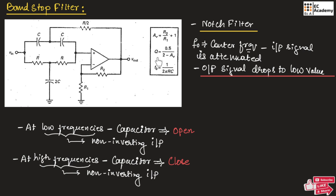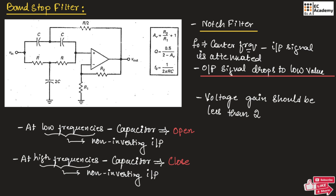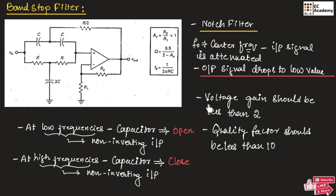The quality factor for the band stop filter can be given as Q is equal to 0.5 divided by (2 minus AV). For a band stop filter, the voltage gain should be less than 2 and the quality factor should be less than 10.